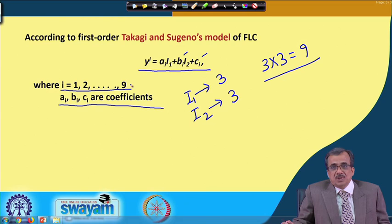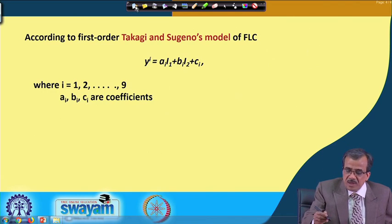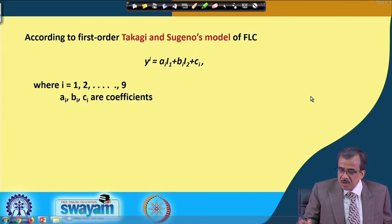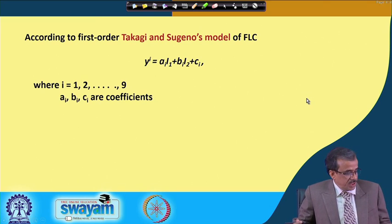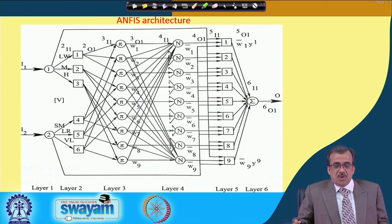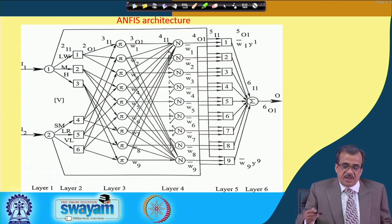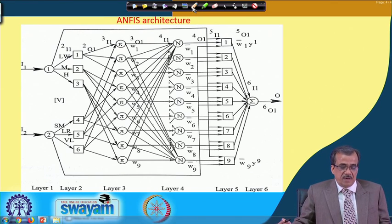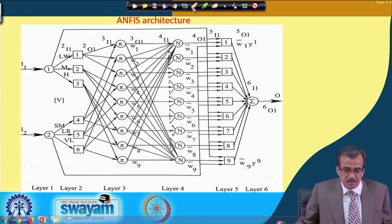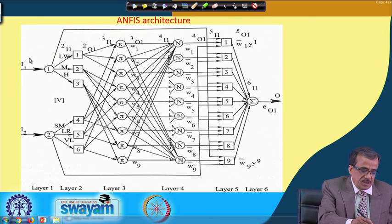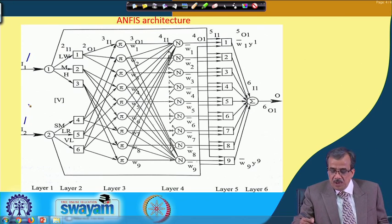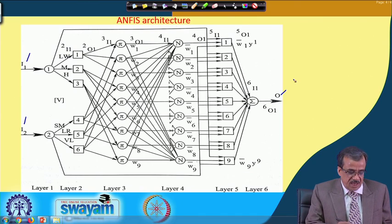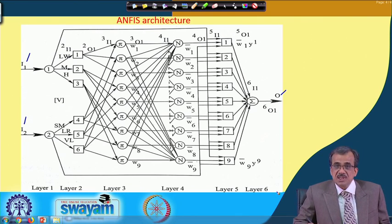Let us see how to determine the output for a set of inputs. This shows the architecture of ANFIS. Let me explain this particular architecture. There are two inputs I1 and I2, and we have got only one output O. This ANFIS architecture consists of six layers.